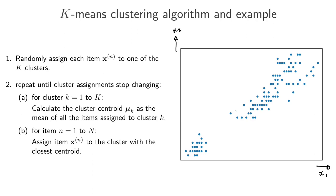In other words, we just randomly say this item belongs to cluster 1, this item belongs to cluster 2, this item also belongs to cluster 2, and so on. For each of the items we throw a k-sided die and assign that item to that cluster. Before we start the algorithm we also need to decide how many clusters we're going to use — what's the value of k. Once you've decided that, you can easily assign each of the items to a random cluster. That's the first step.